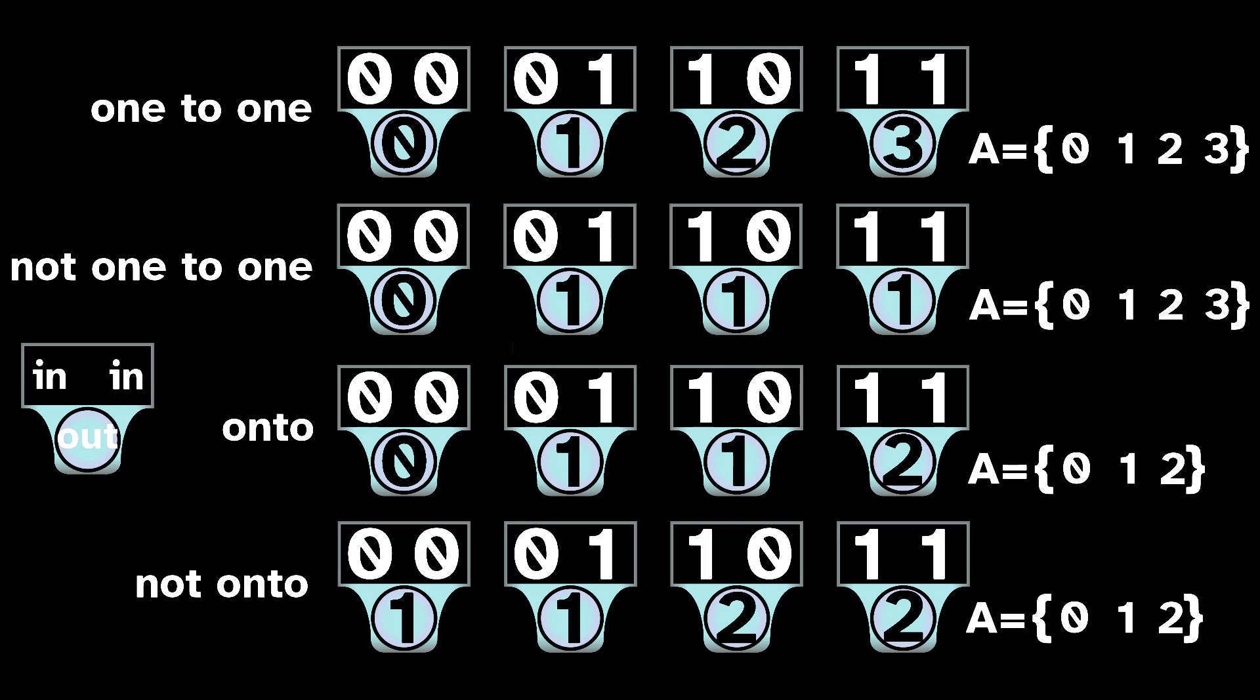A sliding block code can be one-to-one, meaning no two input sequences code to the same output sequence. A sliding block code can also be onto, meaning that every possible sequence in the output space is the code of some sequence from the input space. If a sliding block code is both one-to-one and onto, we can call it a conjugacy map, or just a conjugacy.